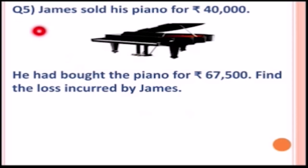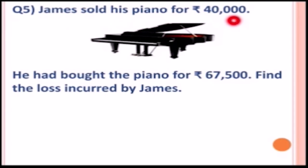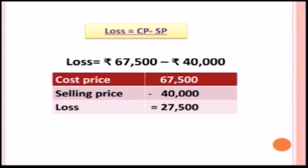Question number five: James sold his piano for rupees forty thousand. He had bought the piano for rupees sixty seven thousand five hundred. Find the loss incurred by James. The cost price is rupees sixty seven thousand five hundred and the selling price is rupees forty thousand. The cost price is greater, so there is a loss. Loss equals CP minus SP.